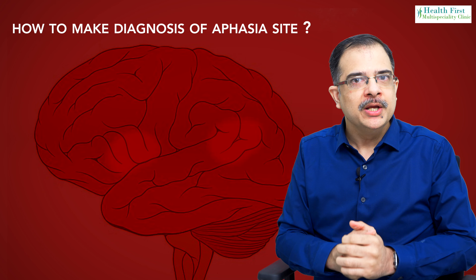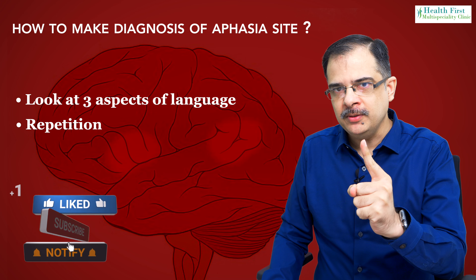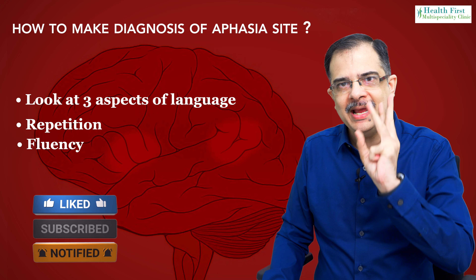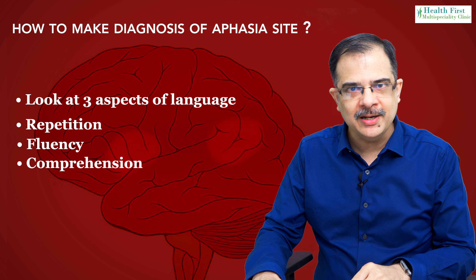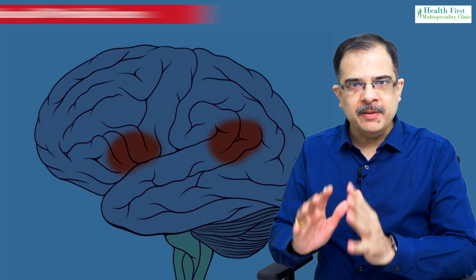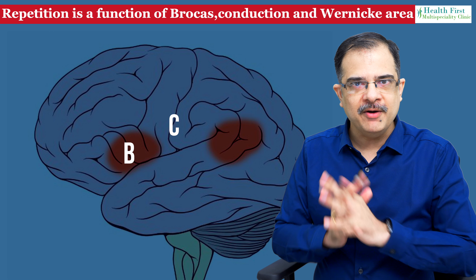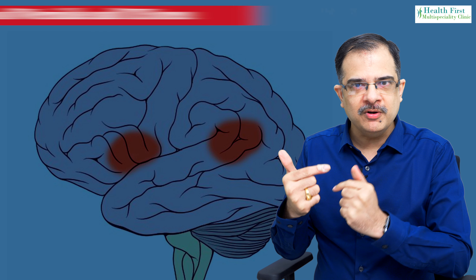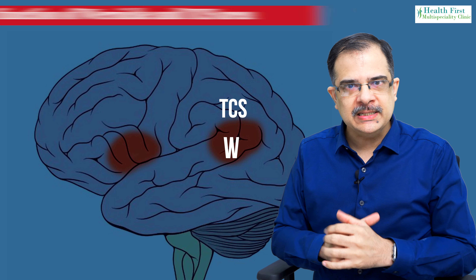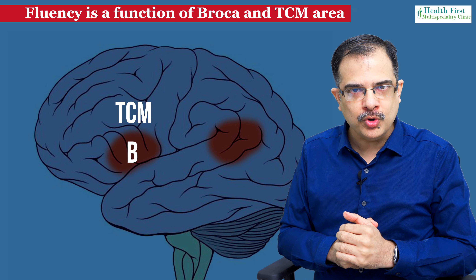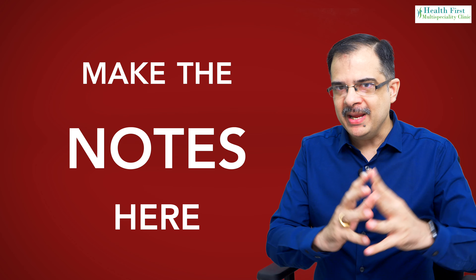Broca's area is helped by the transcortical motor area. To make a diagnosis, only look at three aspects of language: repetition, fluency, and comprehension — and your diagnosis will be clear cut. Revising once again: repetition is a function of Broca's, conduction fibers, and the Wernicke's area. Comprehension is a function of Wernicke's and transcortical sensory. Motor output or fluency is a function of transcortical motor and the Broca's area.